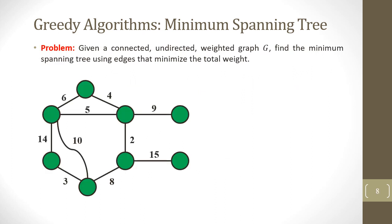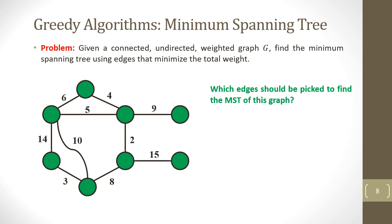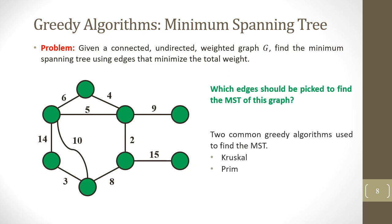Given a connected undirected weighted graph, find the minimum spanning tree using edges that minimize the total weight. Which edges should be picked to find the minimum spanning tree? In the graph, two common greedy algorithms are used: Kruskal's algorithm and Prim's algorithm.